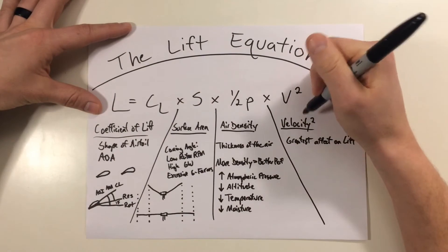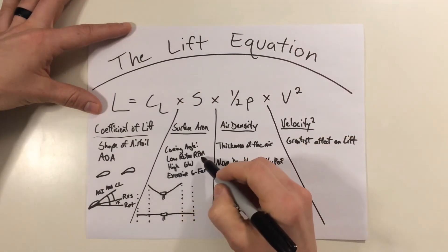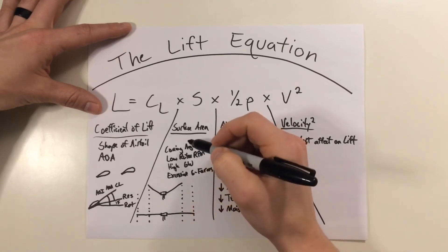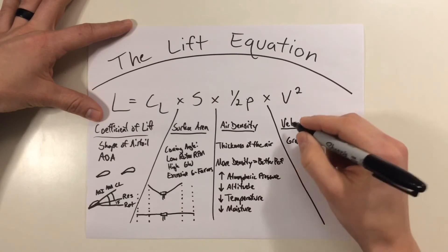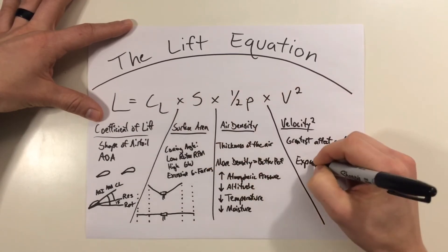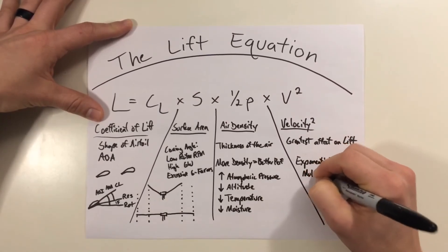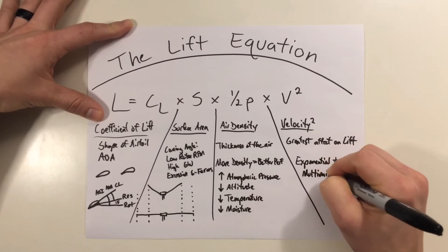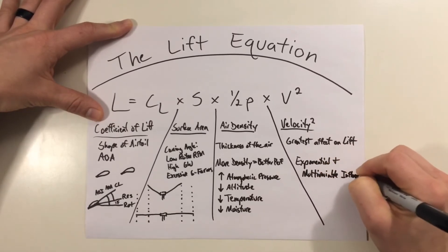Also, as the speed of the airfoil slows down, you can have low rotor RPM causing a coning condition reducing your surface area. So it's important to consider velocity squared because not only does it affect lift exponentially, but it's also going to have a multi-variable influence in the lift equation.